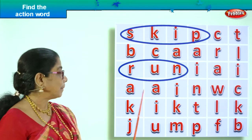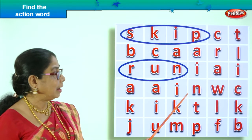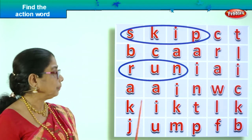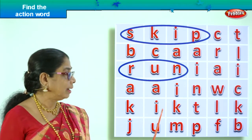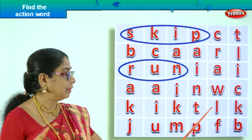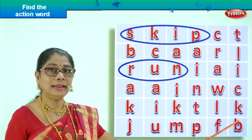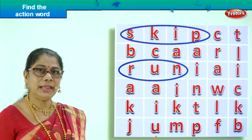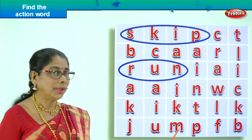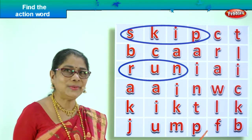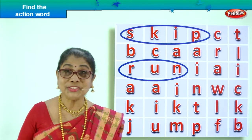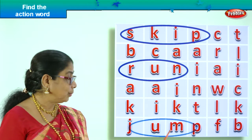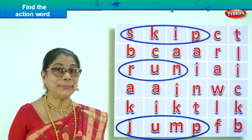Next. A-A-I-N-W-C — any? K-I-K-T-L — no. Last one. J-U-M-P. What is that? Jump. Is jump an action word? Yes, we circle. J-U-M-P, jump.